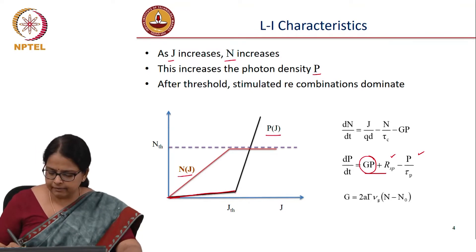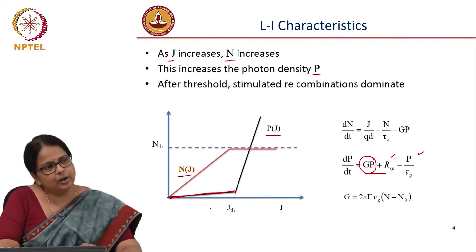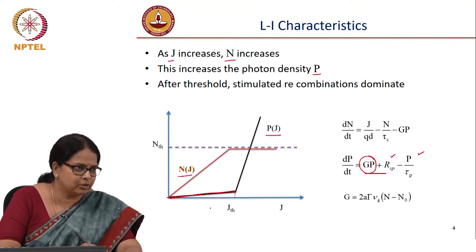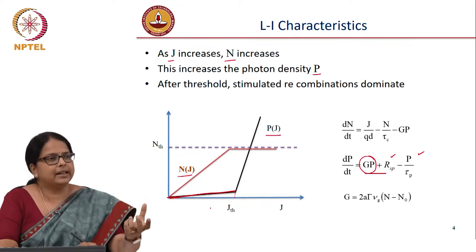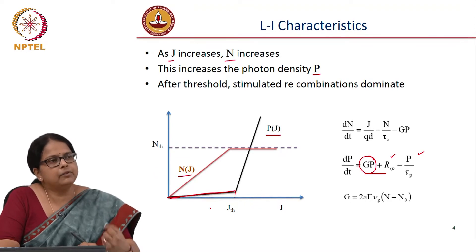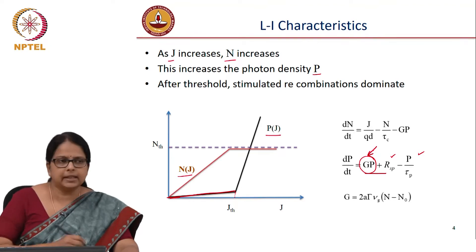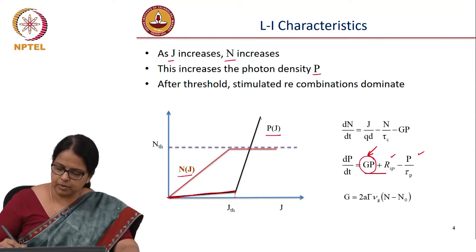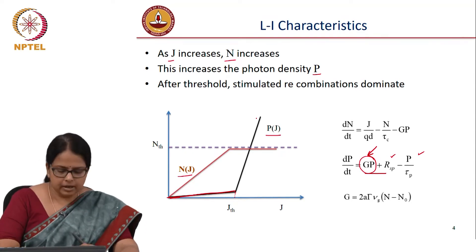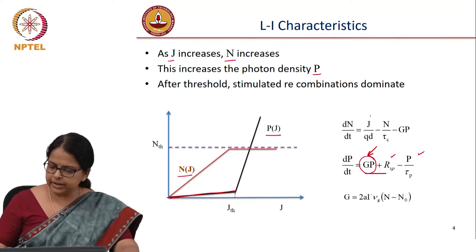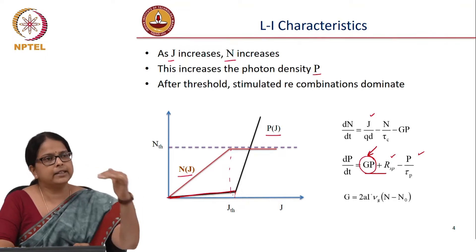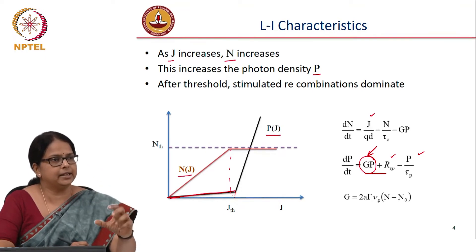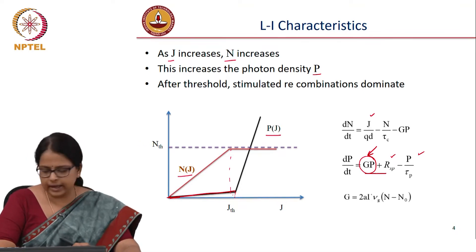In this plot, the y-axis represents both n and P — there are two plots: photon density and carrier density as a function of current. Initially the number of photons is very low and only spontaneous emission is taking over. Once the current reaches the threshold j_th — the current required to achieve n_th — all the losses are overcome. Once losses are overcome, the output photon number starts increasing. The carrier density gets clamped at n_th and remains constant in the system.